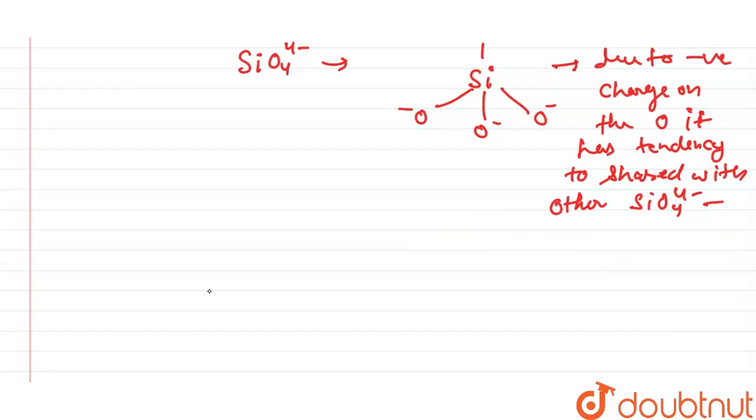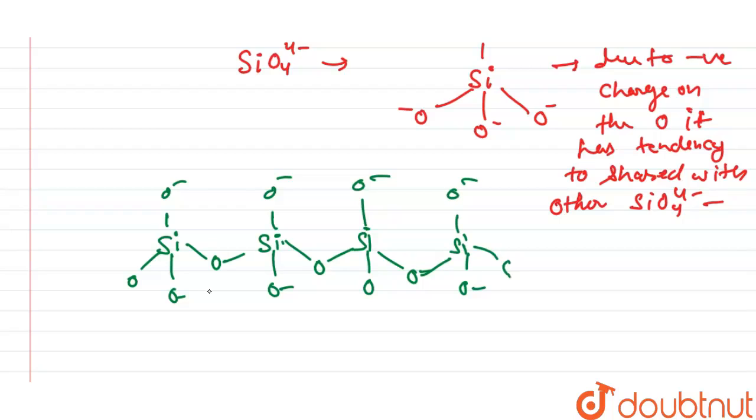Chain silicates are formed if the oxygen atoms are shared with other tetrahedral units: silicon-O^-, O^-, silicon-O^-, silicon-O^-, and so on.